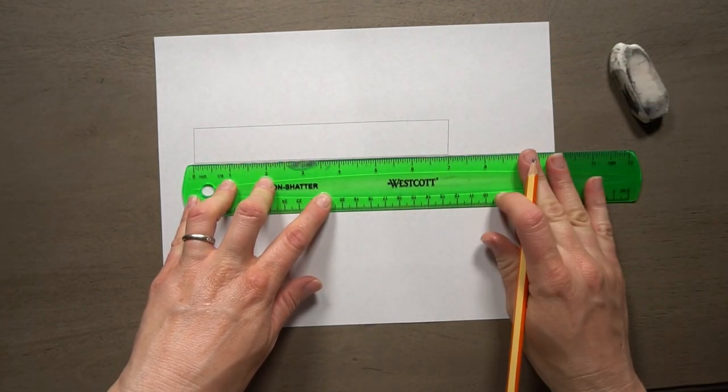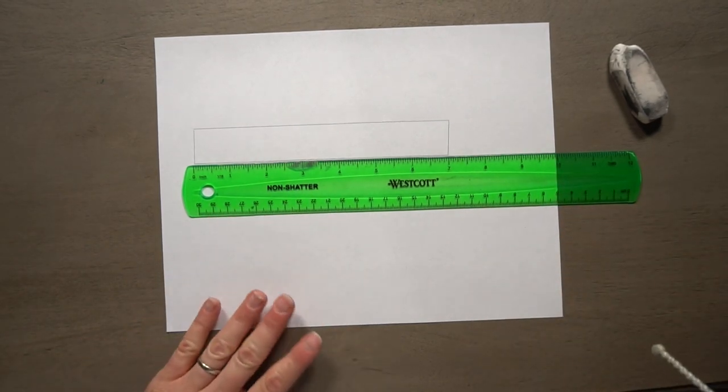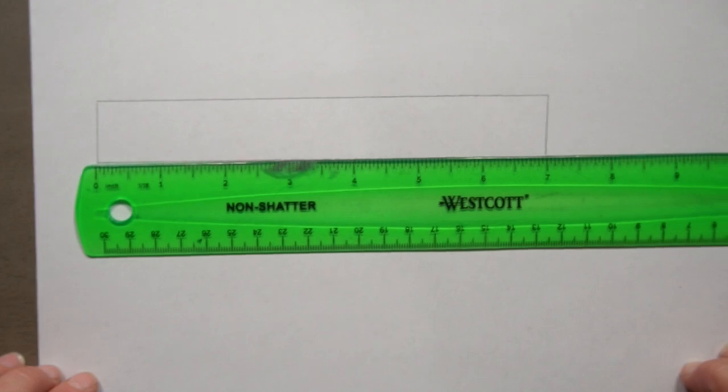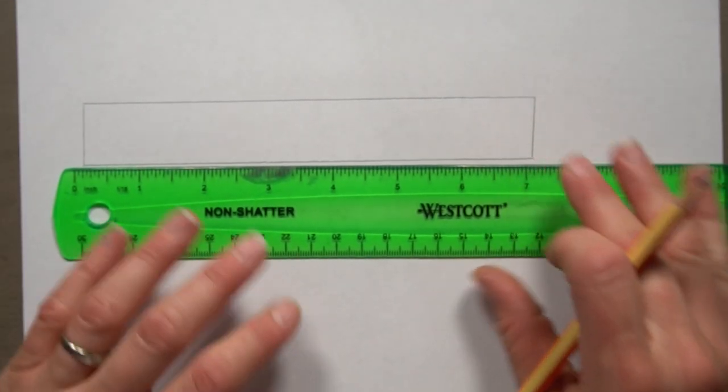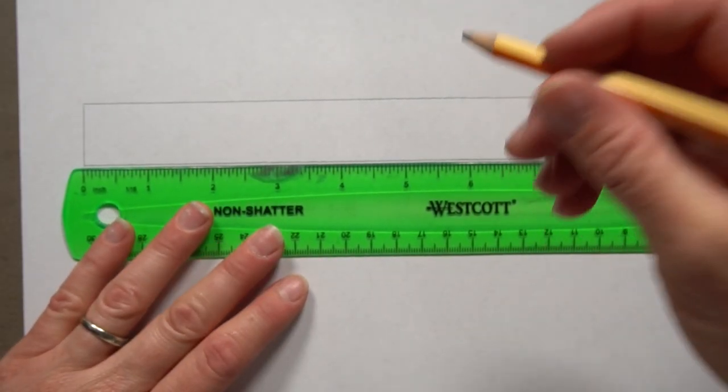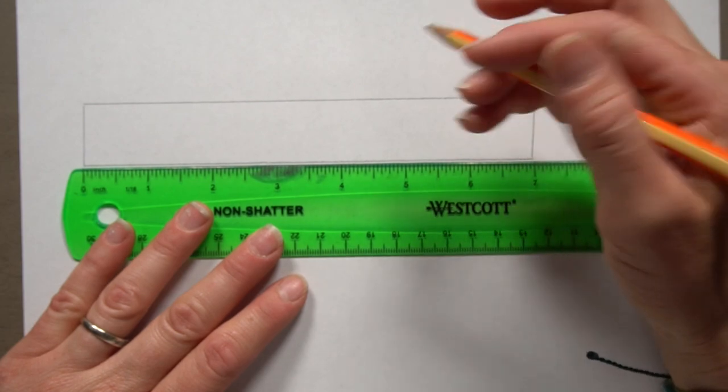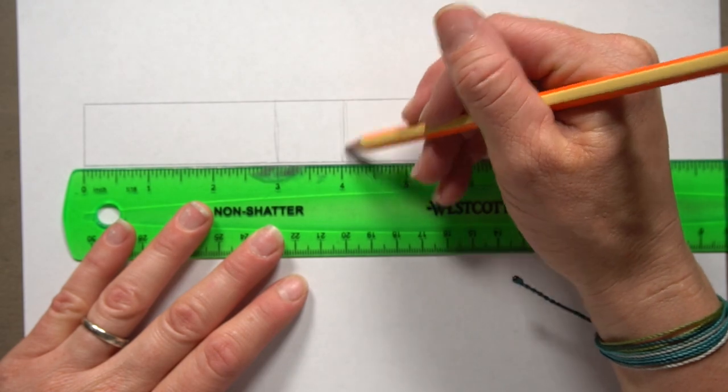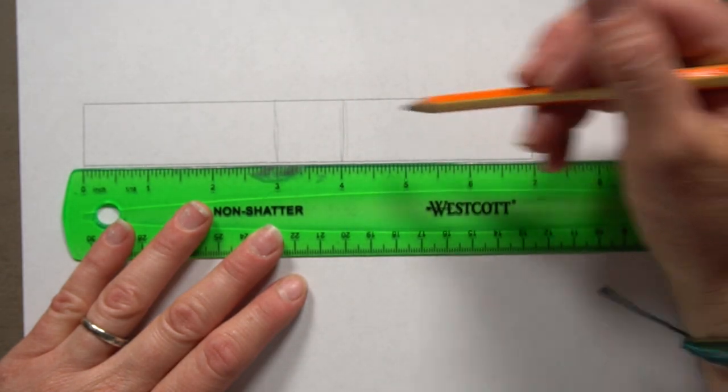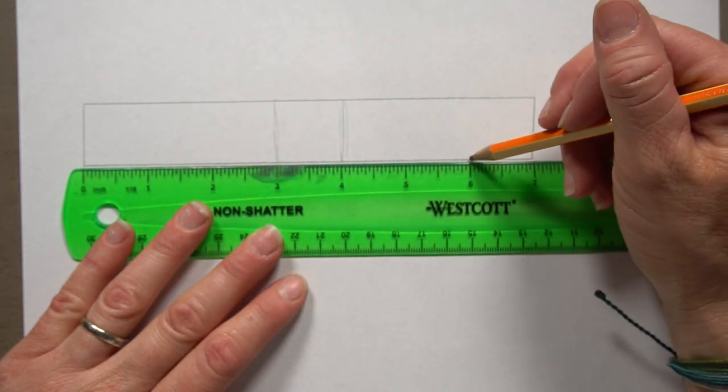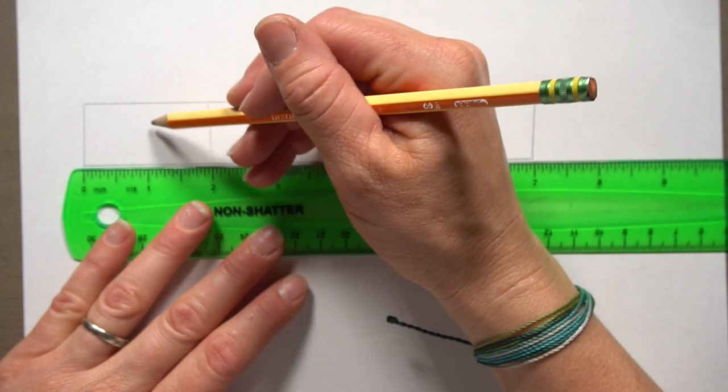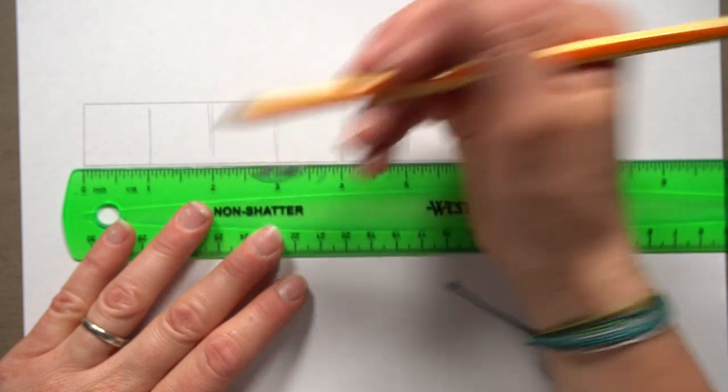To divide something into seven, this is an easy way. What you want to do is create your middle box first. So this box right here. And then you're just going to divide these two sides with two lines into three. So one, two, one, two. So now we have seven boxes across.